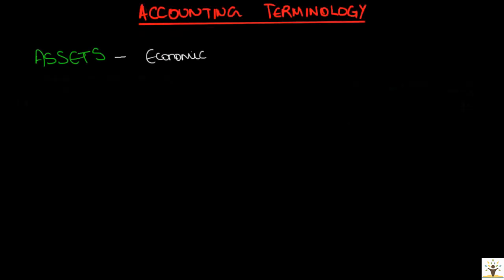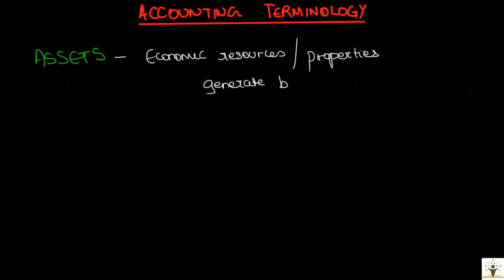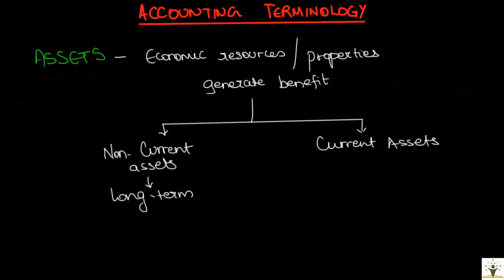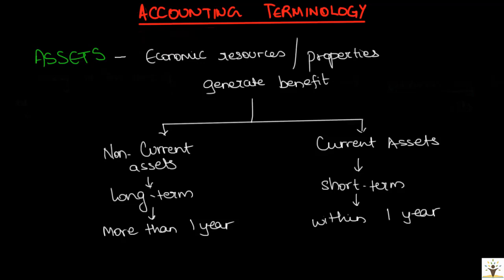Then we have assets. Assets are economic properties or resources owned by the business that will generate benefit for it. Assets are of two types: non-current assets and current assets. Non-current assets are the long-term assets of the business that generate benefit or can be used by the business for a period of more than one year. Whereas current assets are the short-term assets of the business — they will generate benefit or will be used up within a period of one year, or they keep on changing value frequently.